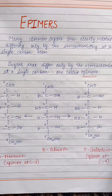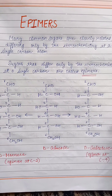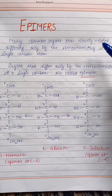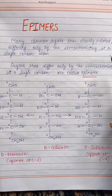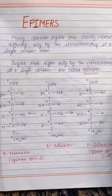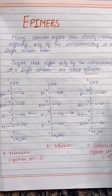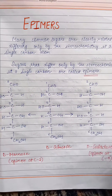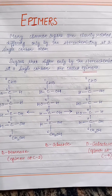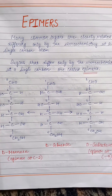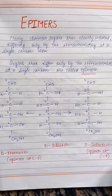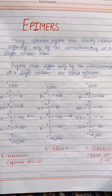Hello friends, today we are going to learn about epimers. Many common sugars are closely related, differing only by the stereochemistry at a single carbon atom. This means that the structure of many sugars is almost similar, but the configuration varies around any one carbon atom.